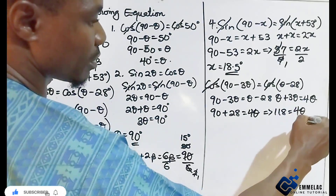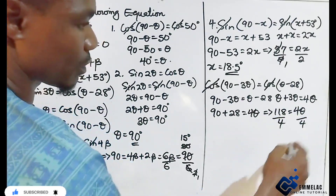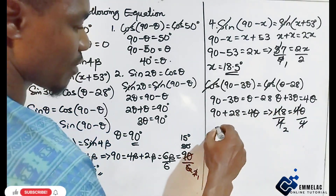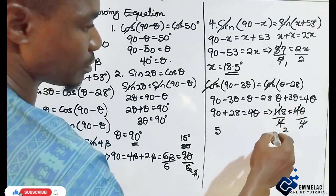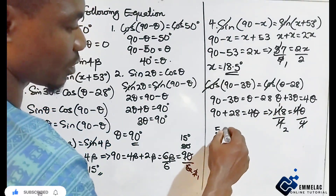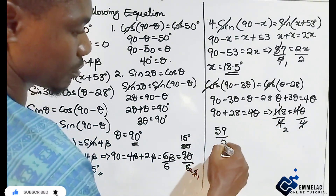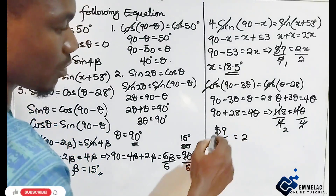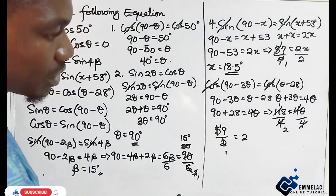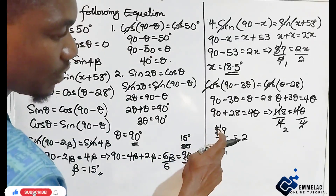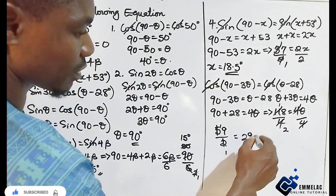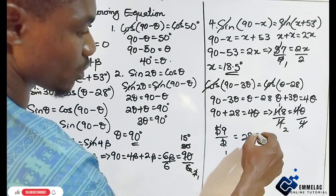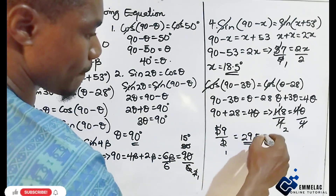Dividing both sides by 4, we get theta equals 29.5 degrees.